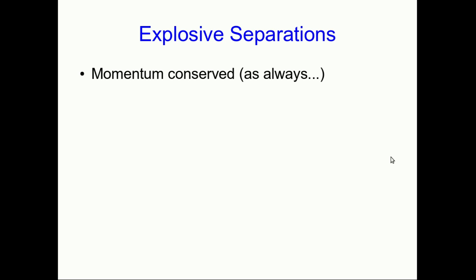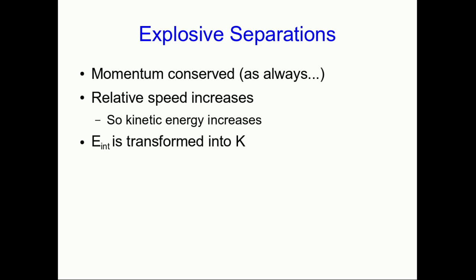One final thing we should look at is explosive separations. As always in an explosive separation if the system is isolated momentum will be conserved, but this is an interaction where the relative speed of the two objects is larger after the collision than it was before the collision, which implies that the kinetic energy increases. Our hypothesis is then that we must have internal energy in the system that's being transformed into kinetic energy. So the system needs some source of internal energy.